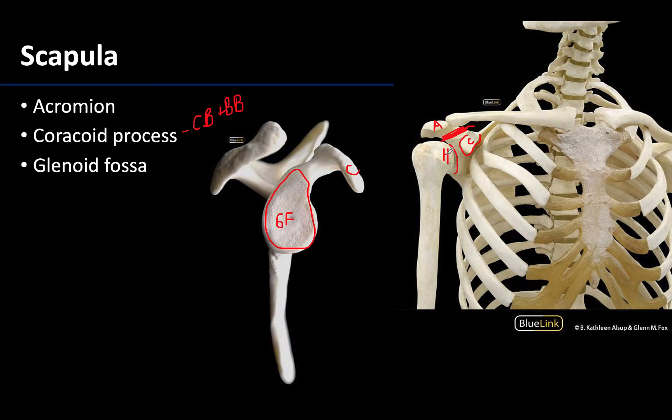This shallowness plays a role in why the shoulder joint is so mobile — you don't have such a tight fit between the bones — but it is also part of the reason why the shoulder joint is less stable.